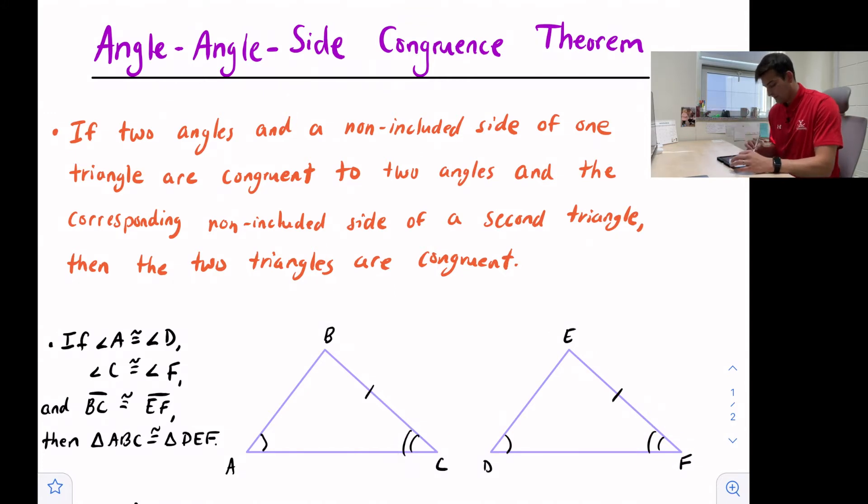And side BC is congruent to side EF, so there's our side. Then we can say that the two triangles are congruent.